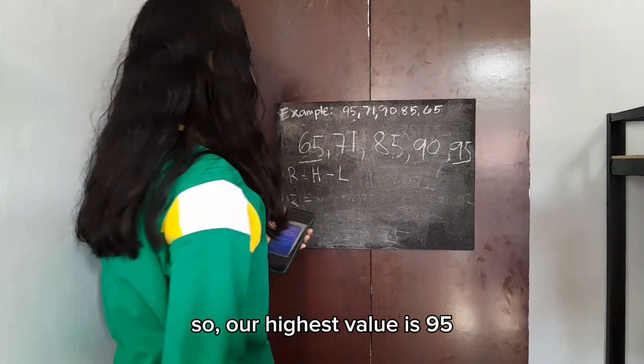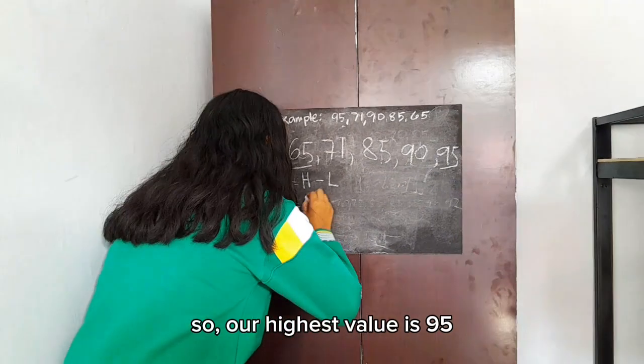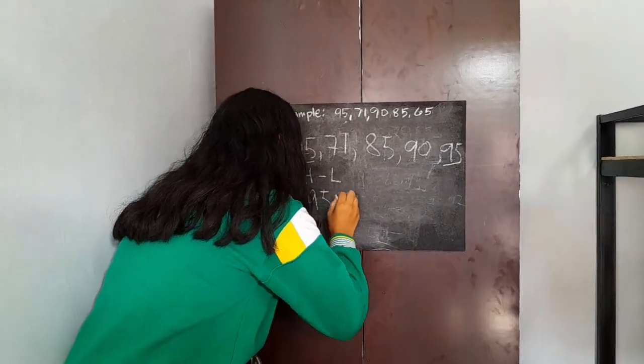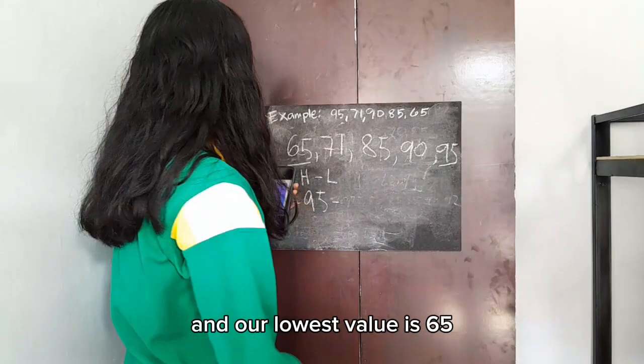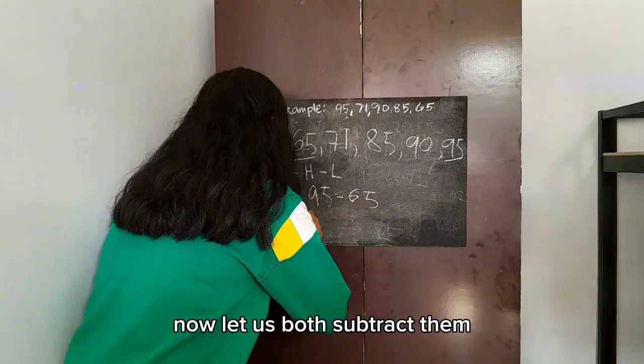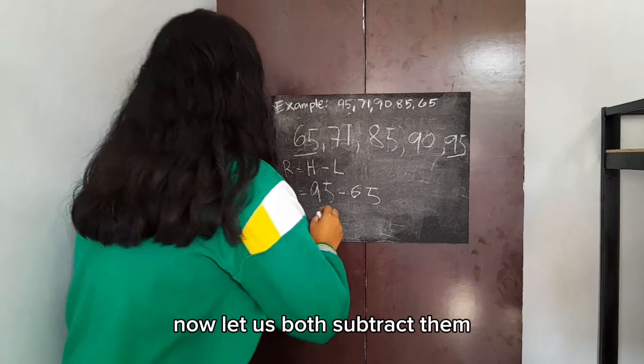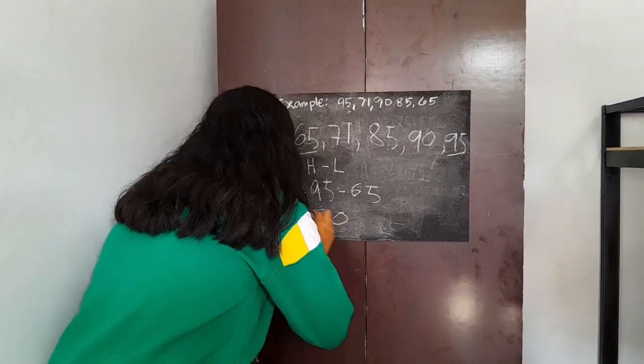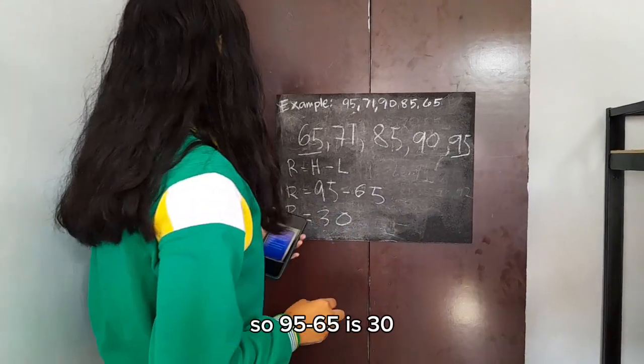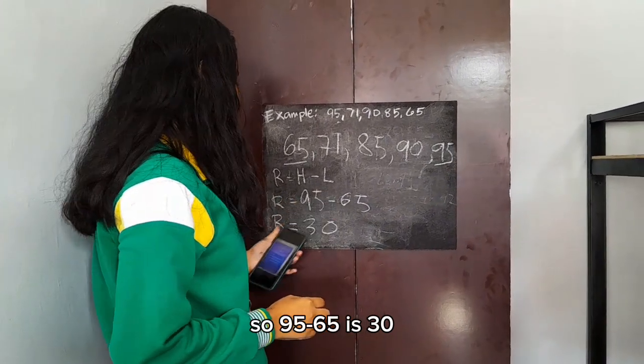So our highest value is 95 and our lowest value is 65. Now let us subtract them. So 95 minus 65 is 30.